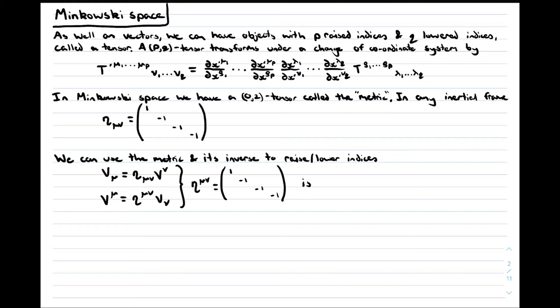We can use the metric and its inverse to raise and lower indices of a tensor. Any sum, which we'll call a contraction, over 1 raised and 1 lowered index gives something coordinate independent, since the raised index transforms with the Jacobian and the lowered index transforms with the inverse Jacobian, so these transformations cancel out. We adopt the convention that any repeated index is summed over. All three of the objects on screen, and any crazy contraction you can think of, will always give something independent of coordinate system.